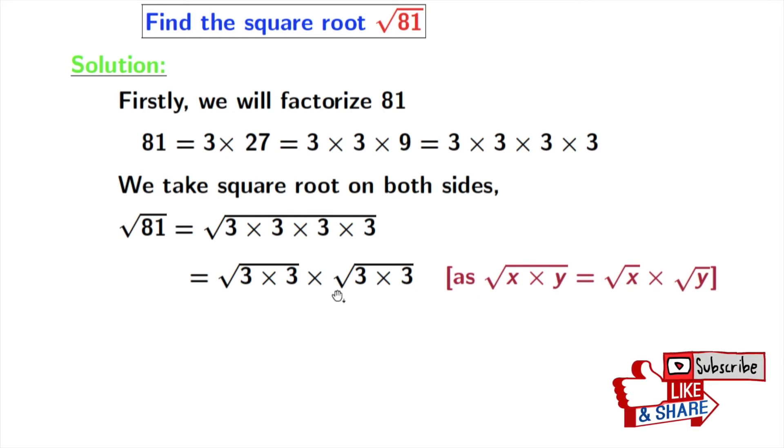Here both x and y are 3 times 3. Now from the first square root we get 3, and also from the second square root we get 3, so we have 3 times 3. As we know that square root of a times a gives us a, where a is 3.